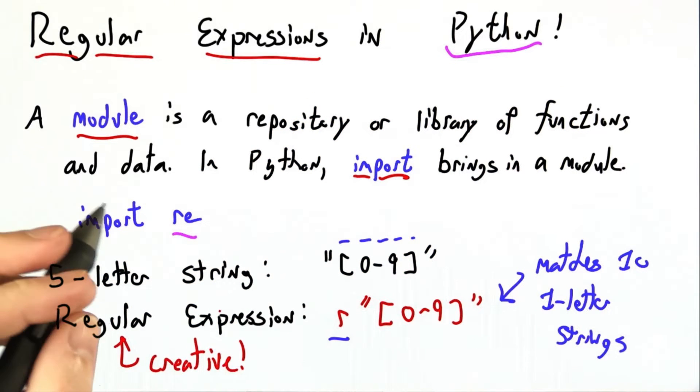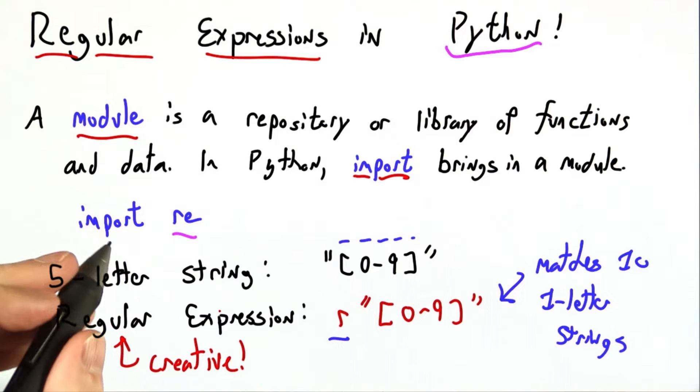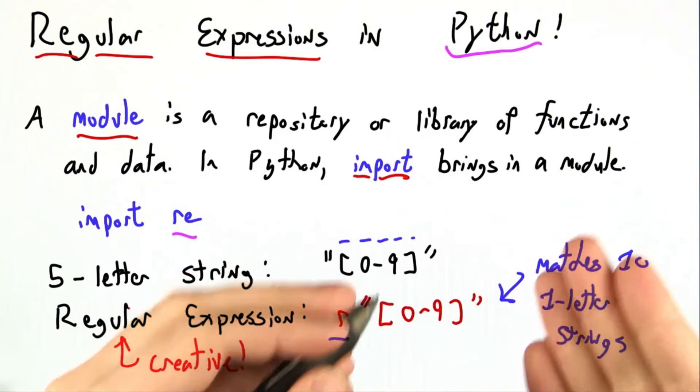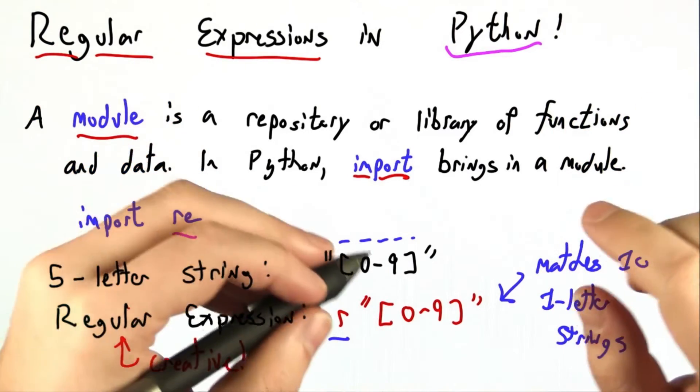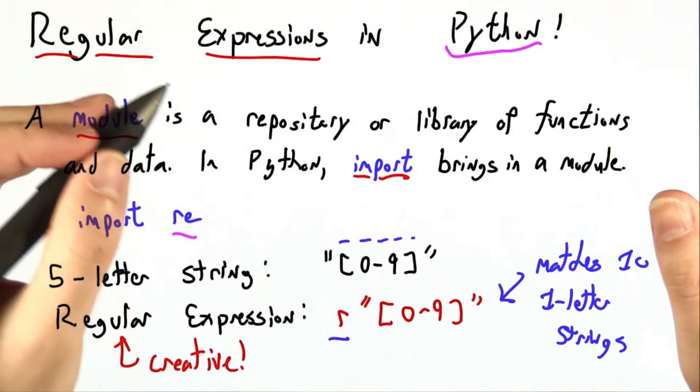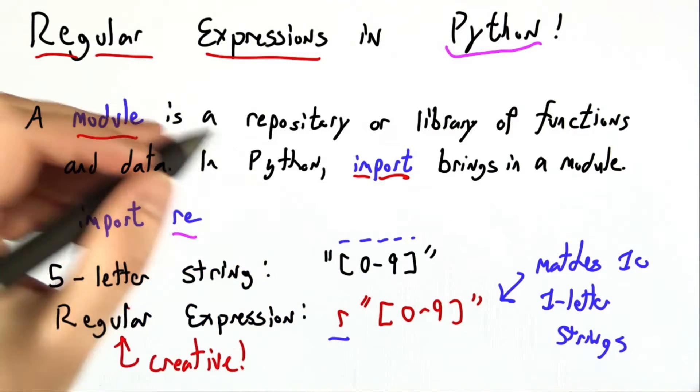Writing regular expressions is a creative process. You, the programmer, have to do it. And I'm using creative here in the same way that people often describe mathematics as elegant. Just as there are many different equations that could get you the number 4: 2 plus 2, 1 plus 3, 8 divided by 2, absolute value square root of 16.